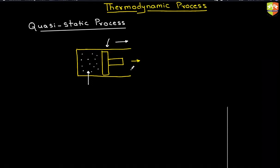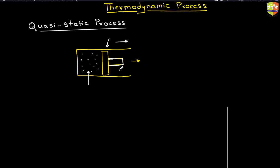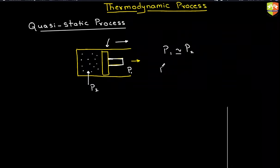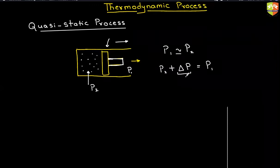So if you are moving the piston extremely slowly, the surrounding is moving, and surrounding pressure is P1 and pressure of the gas is P2. Then if the piston is moving extremely slowly, then P1 is nearly equal to P2. Pressure of the gas is only slightly more than P1, so that it pushes forward. Delta P tends to zero. So whatever is the pressure outside, you can say that is the pressure of the gas also in the case of a quasi-static process.